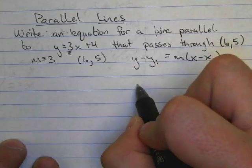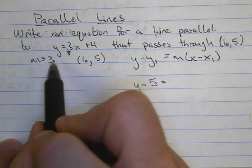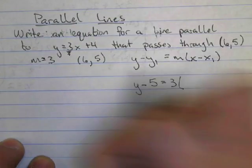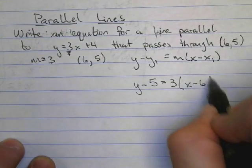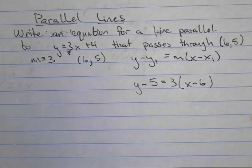And we get y minus 5 is equal to my slope, m, 3 times x minus 6. And there we've built an equation of a parallel line that is passing through 6 comma 5.